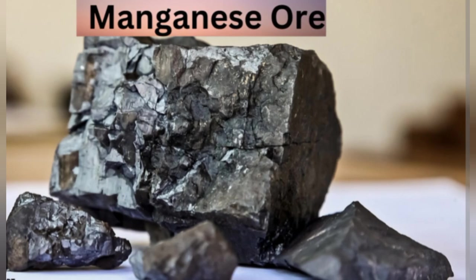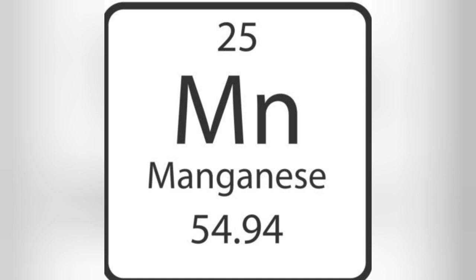According to the Encyclopedia Britannica, manganese is a chemical element, one of the silvery white hard brittle metals of group seven of the periodic table. Manganese is a chemical element with the symbol Mn and atomic number 25.